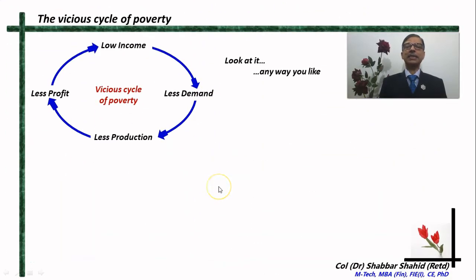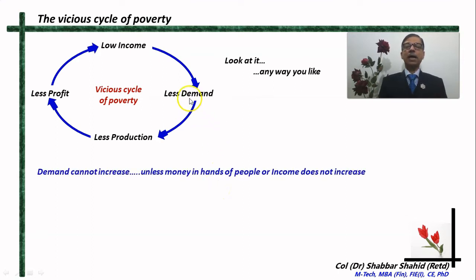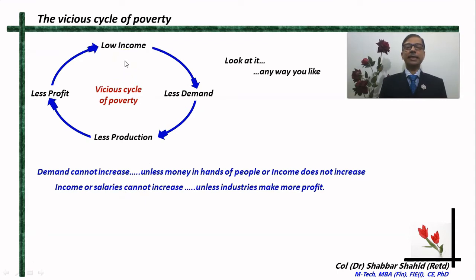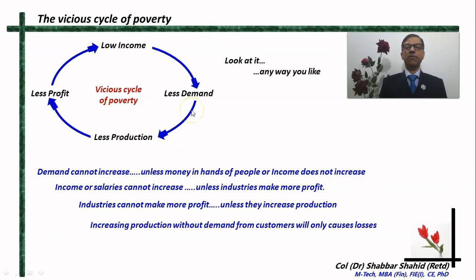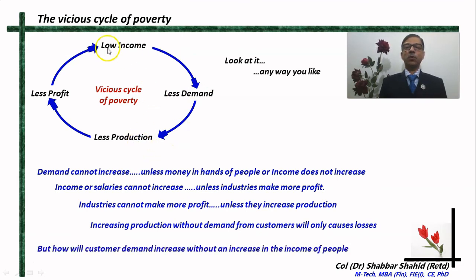Now let us see it in the reverse direction. Demand cannot increase unless income in the hands of people increases. People will not come to buy fruits from Maya Devi unless they have money in their hands. People will not buy clothing, cars, or televisions unless they have money. And income cannot increase unless industries make more profit and there is more employment. And industries cannot increase their profit unless they increase their production. But why will they produce more if there is less demand from customers? Unless customers increase the demand, the industry will not produce more.